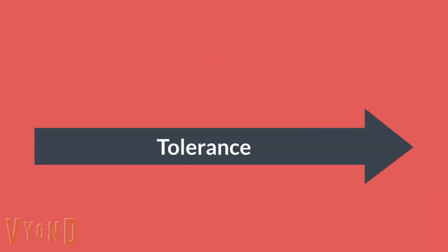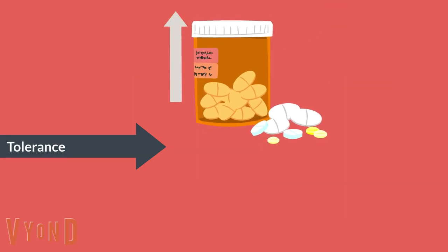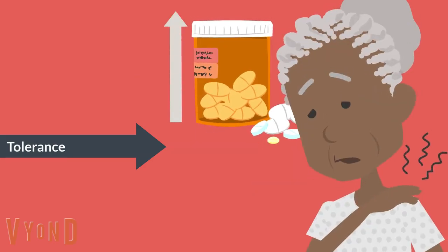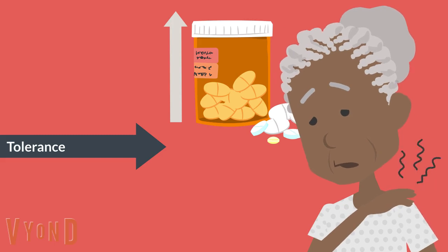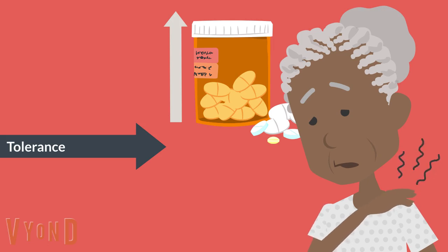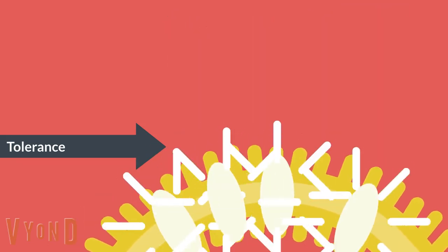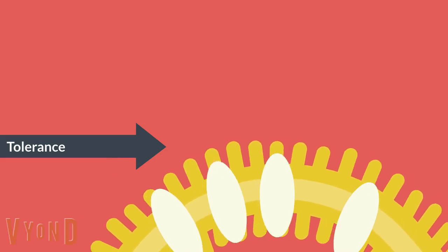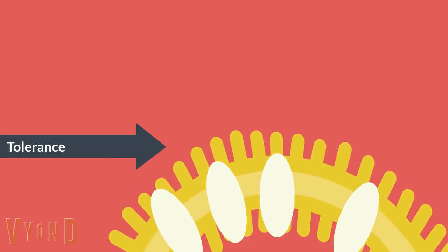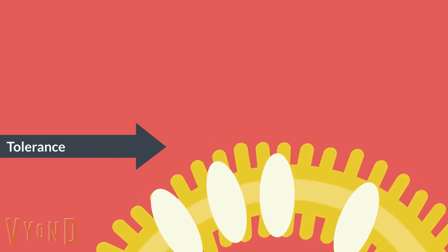Since we're talking about mechanism of action, it's important to mention that exposure to opioid drugs can lead to tolerance, which involves decreased responsiveness to the drug, requiring increased doses to reach the same effect. The mechanism of tolerance is not completely understood, but is thought to involve adaptive pathways by increasing receptors on pre- or post-synaptic neurons.